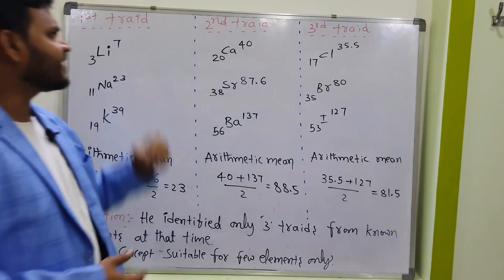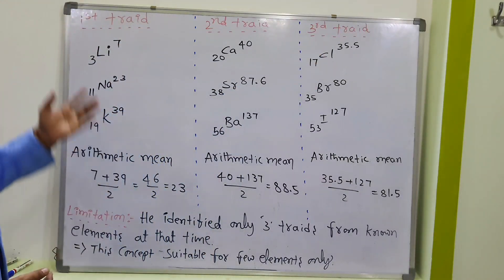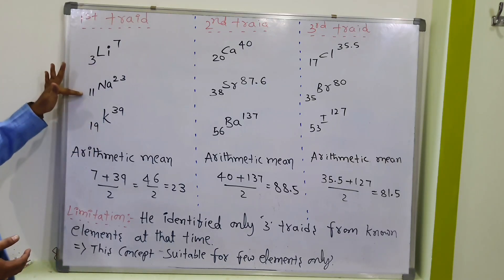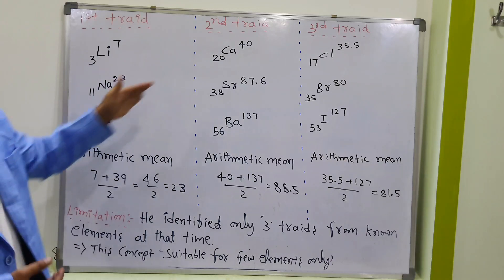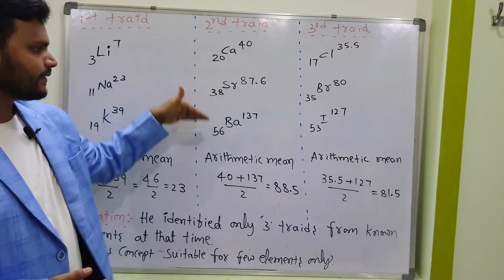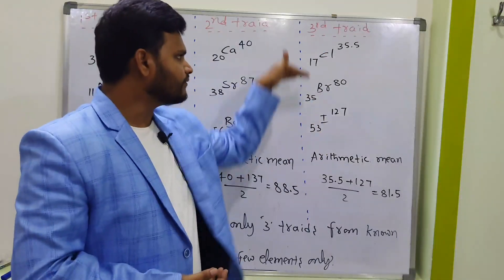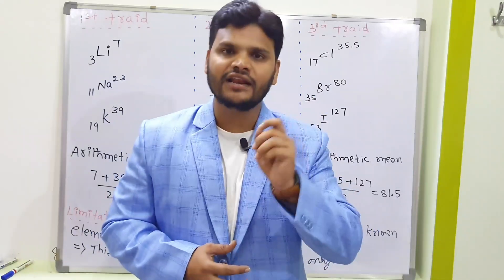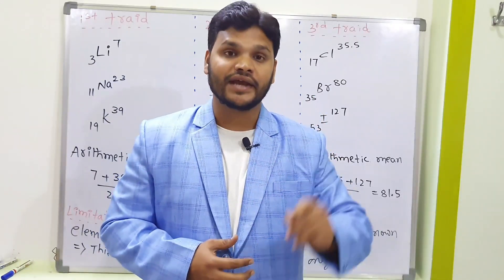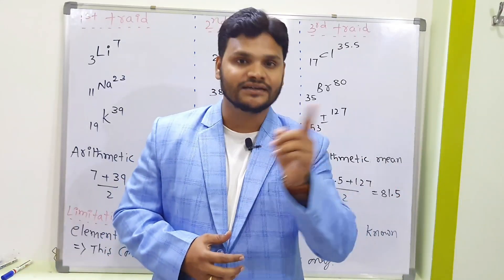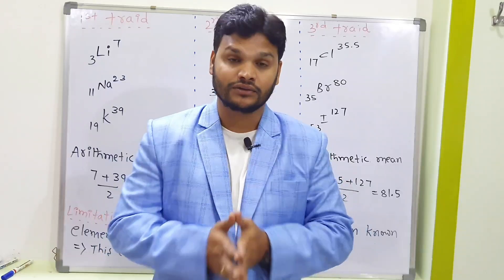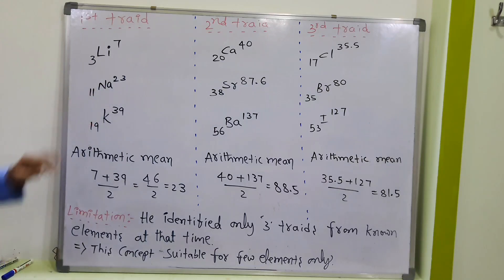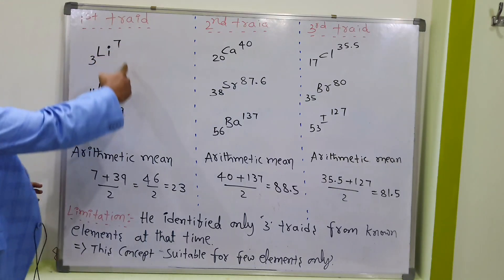The first triad is lithium, sodium, potassium. The second triad is calcium, strontium, barium. The third triad is chlorine, bromine, iodine. The atomic weight of the middle element is equal to the average of the atomic weights of the first and third elements — this is called Döbereiner's triad.